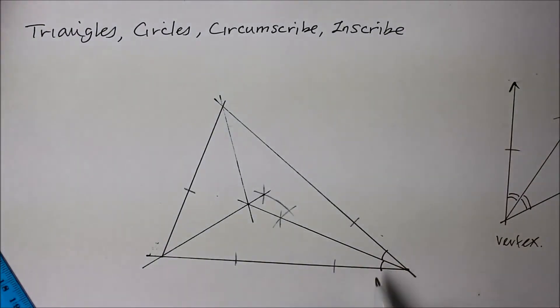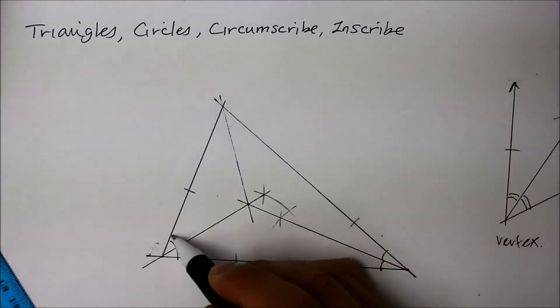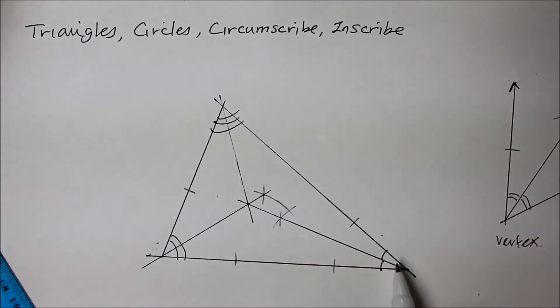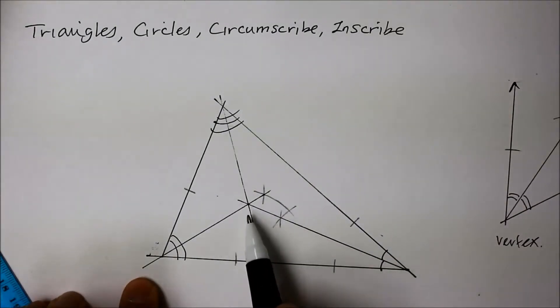All right, so I have three angle bisectors. And these three angle bisectors are intersecting at this point.